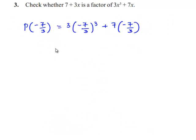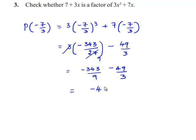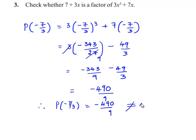On simplification, we get 3 times (−343) divided by 27 minus 49 divided by 3. Since 3 goes into 27 as 9, we get −343 divided by 9 minus 49 by 3. On further simplification, we get −490 divided by 9.